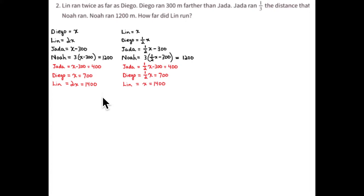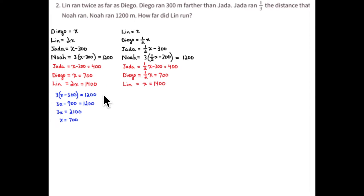At this point you can practice a little bit of algebra. You have several expressions and their values. There's an expression for Noah, three times (x minus 300) equals 1,200; an expression for Jada; and an expression for Lin. If you choose any one of these expressions and the value for that expression, you can solve for x, and you know what the answer is supposed to be, so it's a nice way to practice in context.